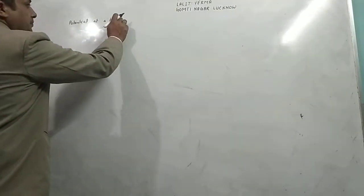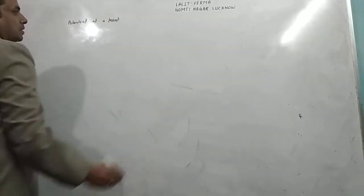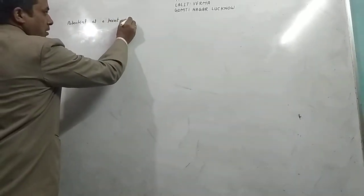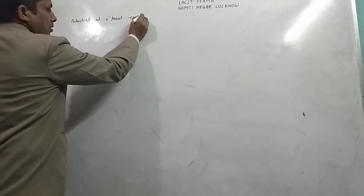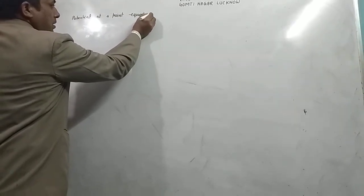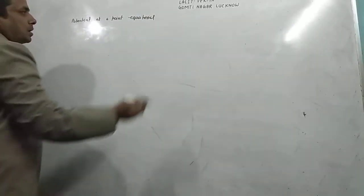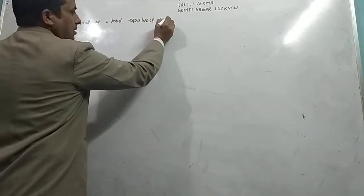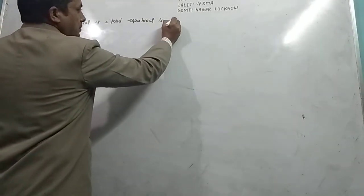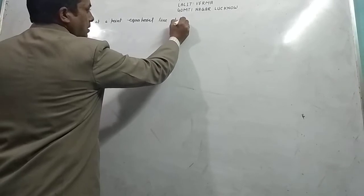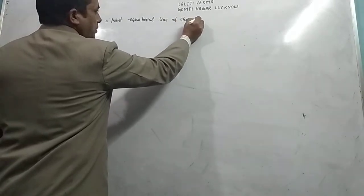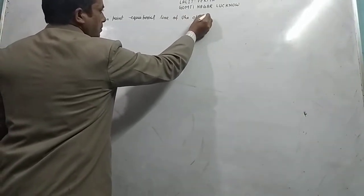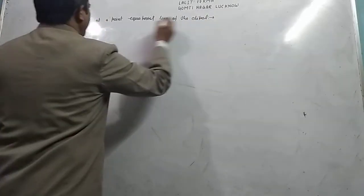Start with it. Potential IIT point. Equatorial line of the dipole.